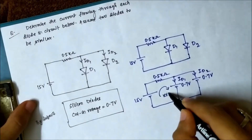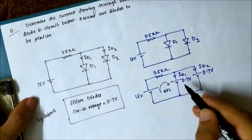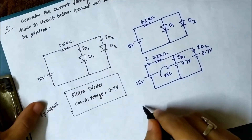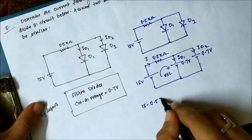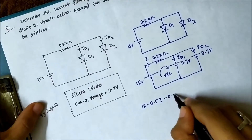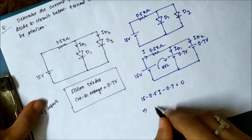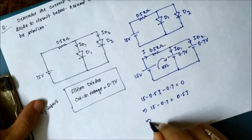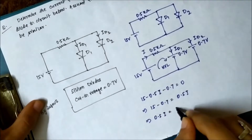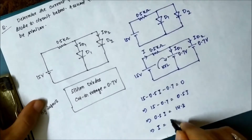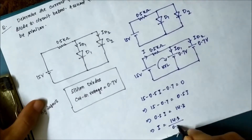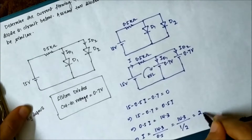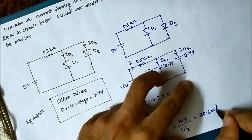Now let us apply KVL in this loop to determine ID1. Naming this current as i, the KVL equation gives: 15 minus 0.5i minus 0.7 equals 0. That implies 15 minus 0.7 equals 0.5i, so 0.5i equals 14.3, giving i equals 14.3 divided by 0.5, which equals 28.6 milliampere.